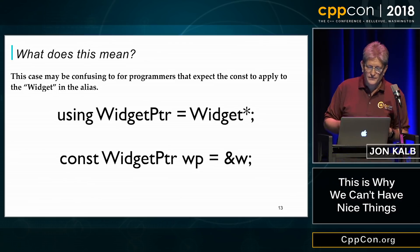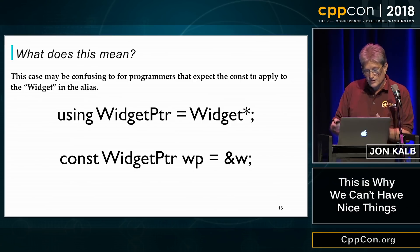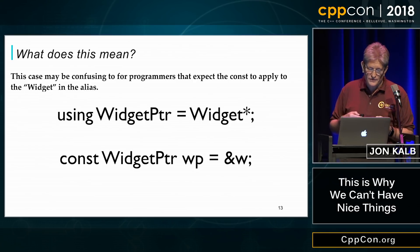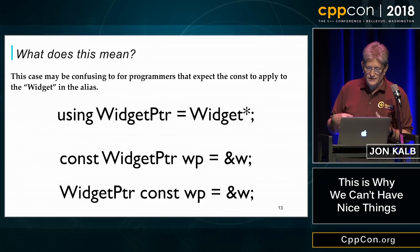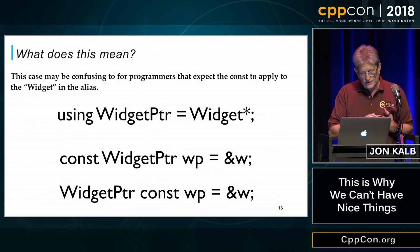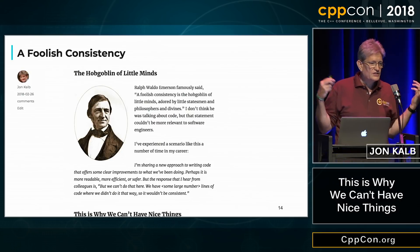It can also be confusing. For example, I've created a type alias here of a widget pointer. And if you're not using EastConst, you might be confused by looking at this and think, oh, this is a pointer to a constant widget. But of course that's not what it is — it's a constant pointer to a widget, reading left to right.